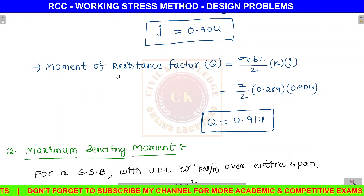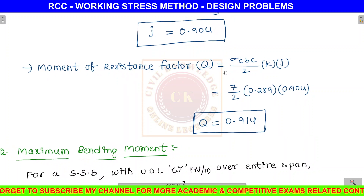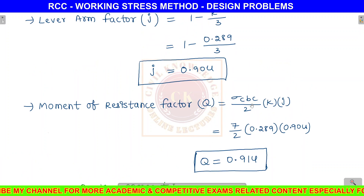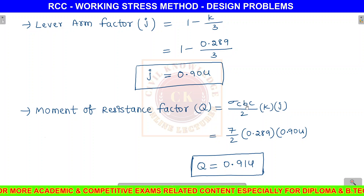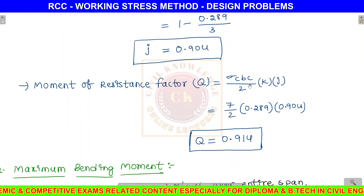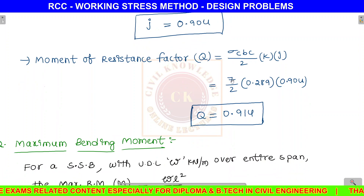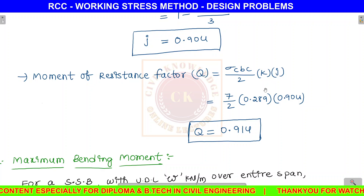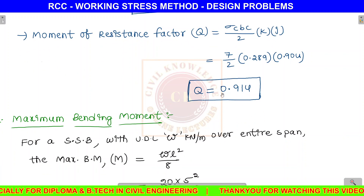The last design constant is the moment of resistance factor Q. The formula is Q = (sigma CBC / 2) × K × J. Substituting: sigma CBC = 7 N/mm² for M20 concrete, K = 0.289, J = 0.904. So Q = 0.914.